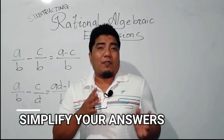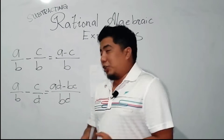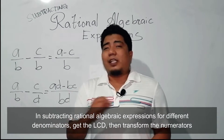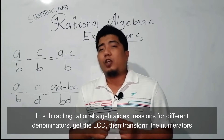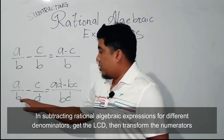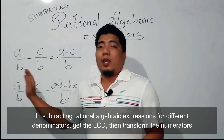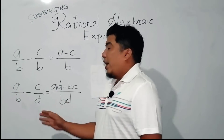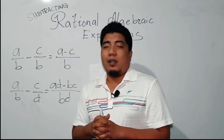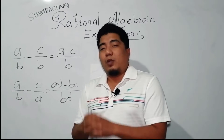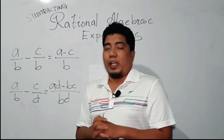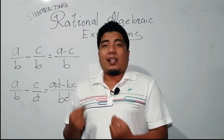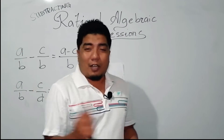How about if they have different denominators? If they have different denominators, the same as the addition, we will still use the LCD. By using the LCD, we will get the equivalent value of that fraction, and then we subtract the rational algebraic expressions. For you to learn that efficiently, let's consider an example.